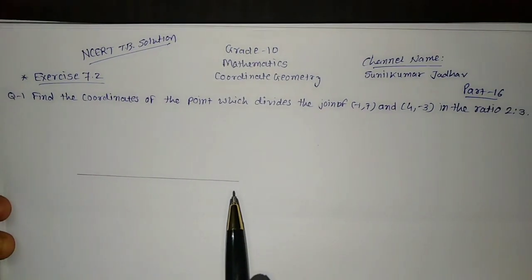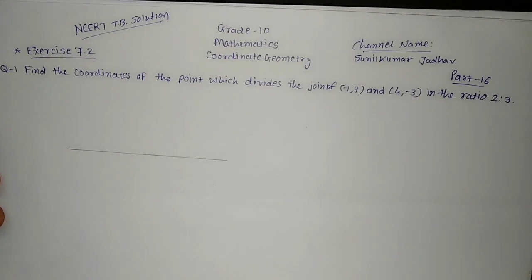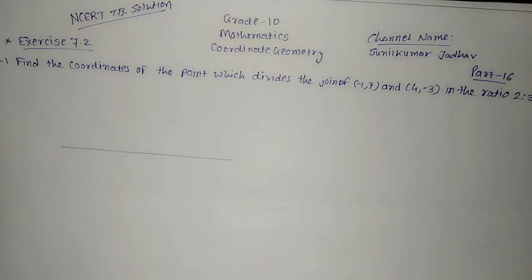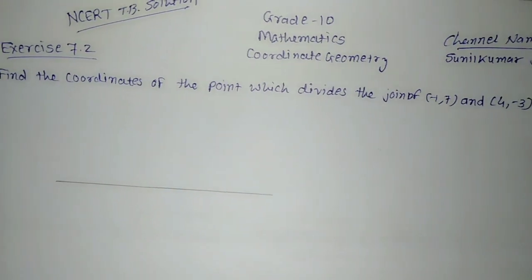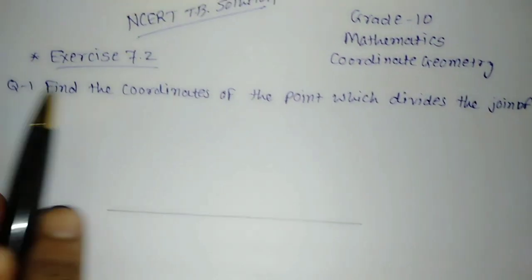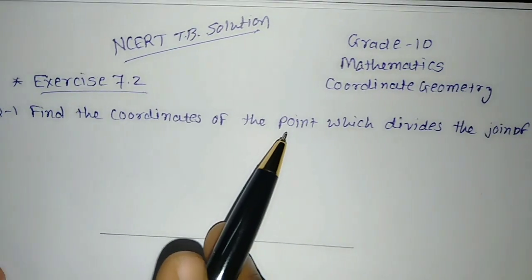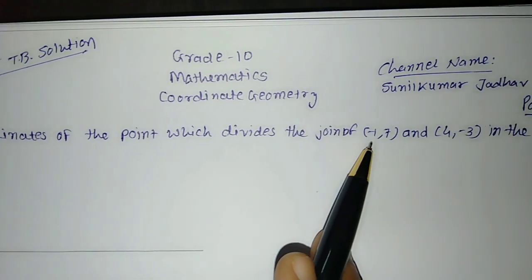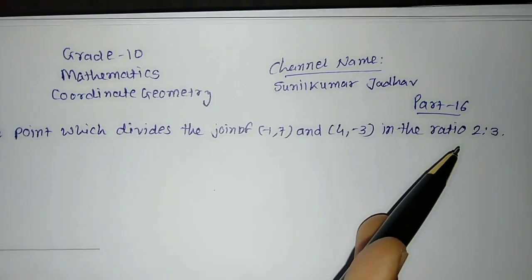In solution of exercise 7.1, all the sums we have seen up till video number part 1 to 14. In part 15 we have seen the section formula. Let us see question number 1 from exercise 7.2: Find the coordinates of the point which divides the join of (-1, 7) and (4, -3) in the ratio of 2:3.